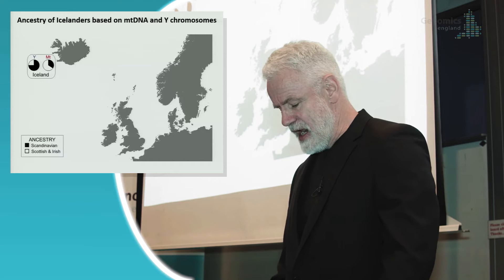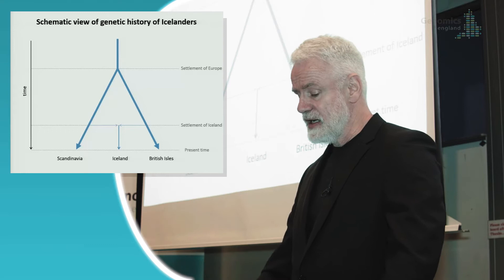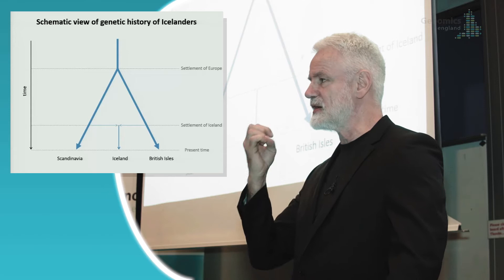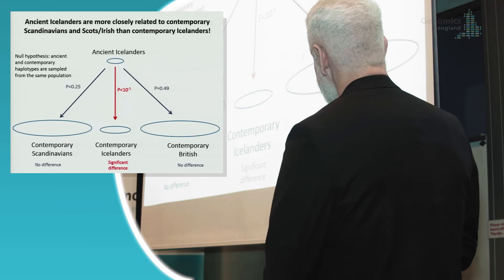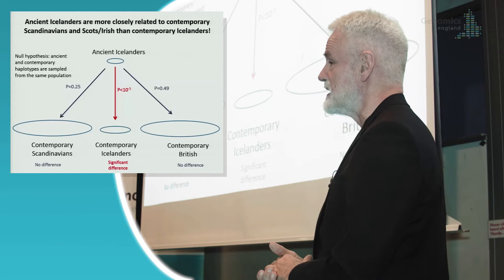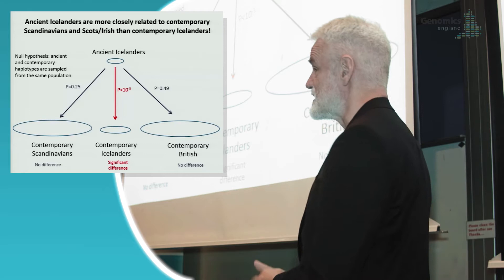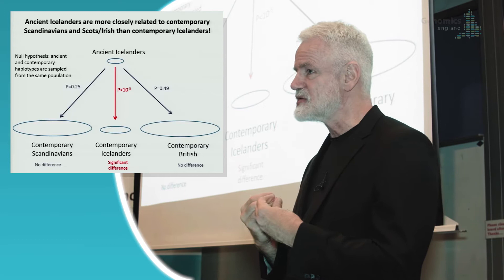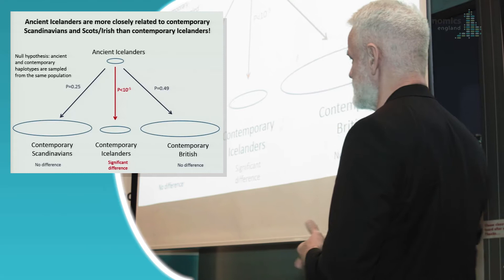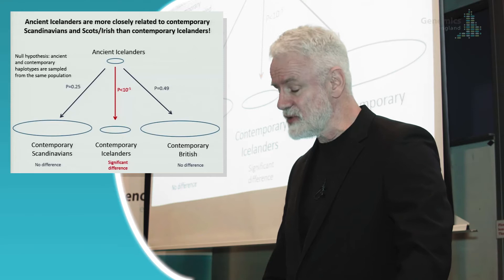We did more than that. We went back to skulls from the time of the settlement of Iceland, isolated DNA from them, and compared the variants with DNA in current-day Icelanders, Brits, and Scandinavians. Interestingly, variants in current-day Icelanders differ significantly from the distribution of variants in the DNA from the time of settlement, but not in current-day Brits or Scandinavians. So Icelanders have changed more over the past 1,100 years than Brits or Scandinavians have, in spite of being isolated. This is the consequence of drift — we have gone through many population bottlenecks because of volcanic eruptions and the plague.